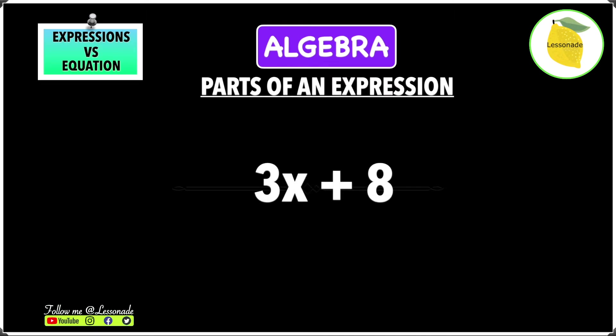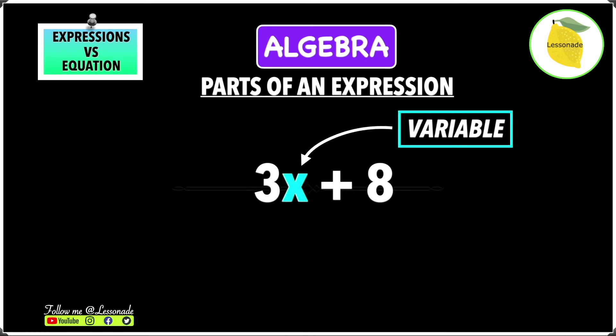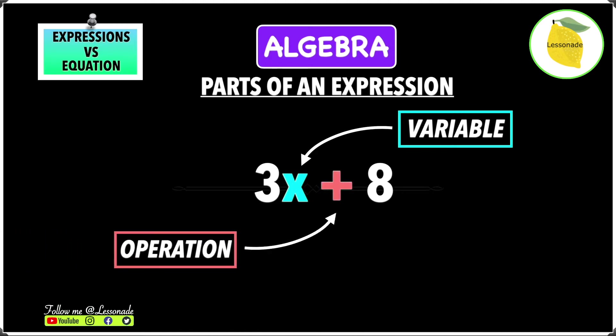Now let's have a look at the parts of this expression: 3x plus 8. The first part is called a variable, and the variable is basically the symbol. The next part is the operation, and the operation is the sign — whether it's plus, minus, times, or division. This is called the operation in an expression.